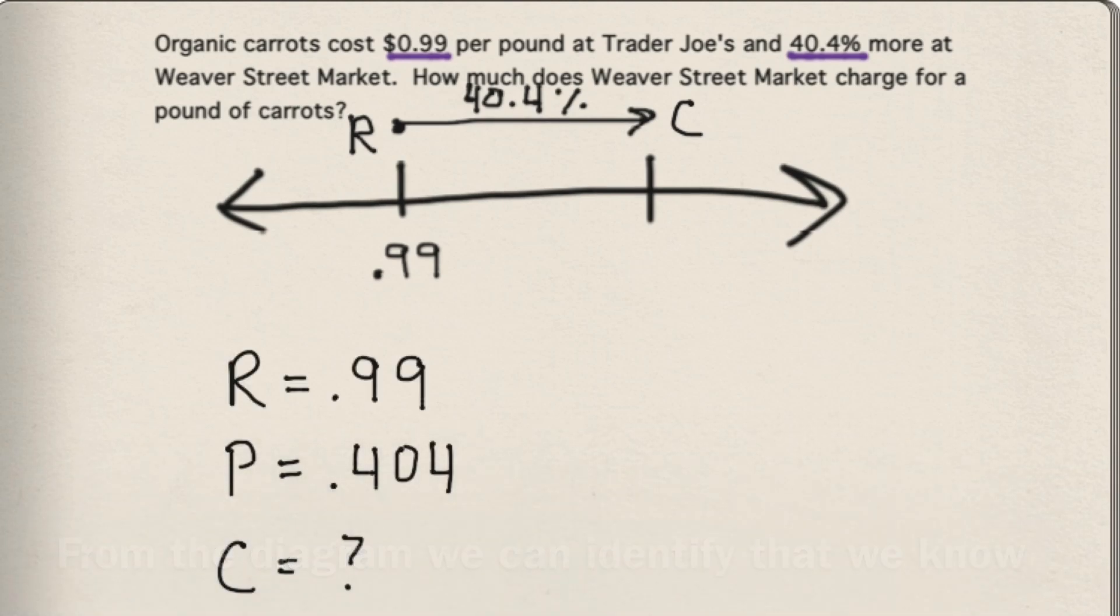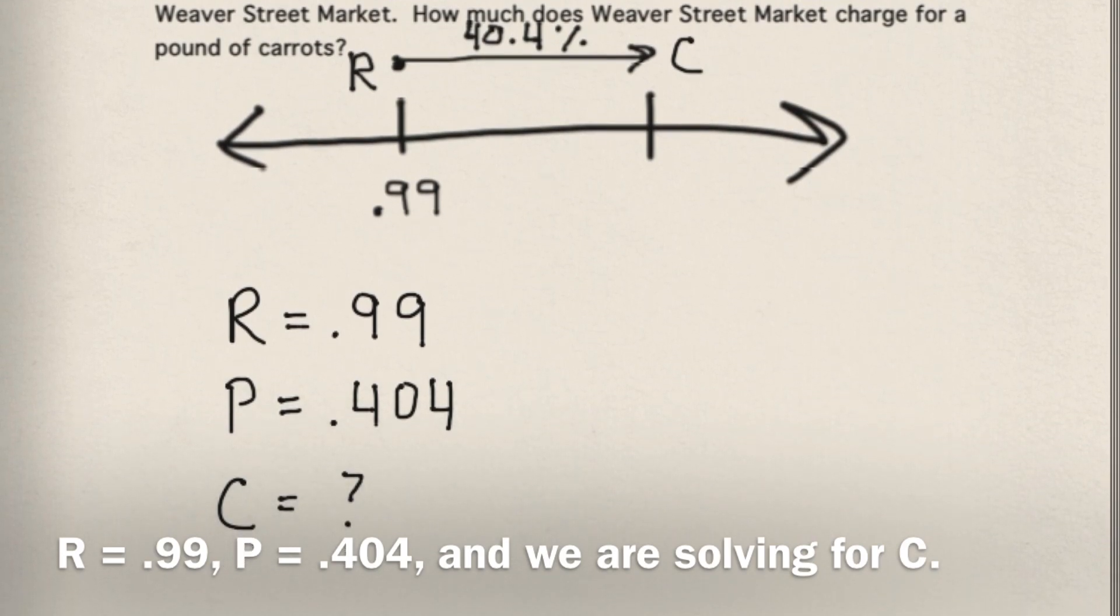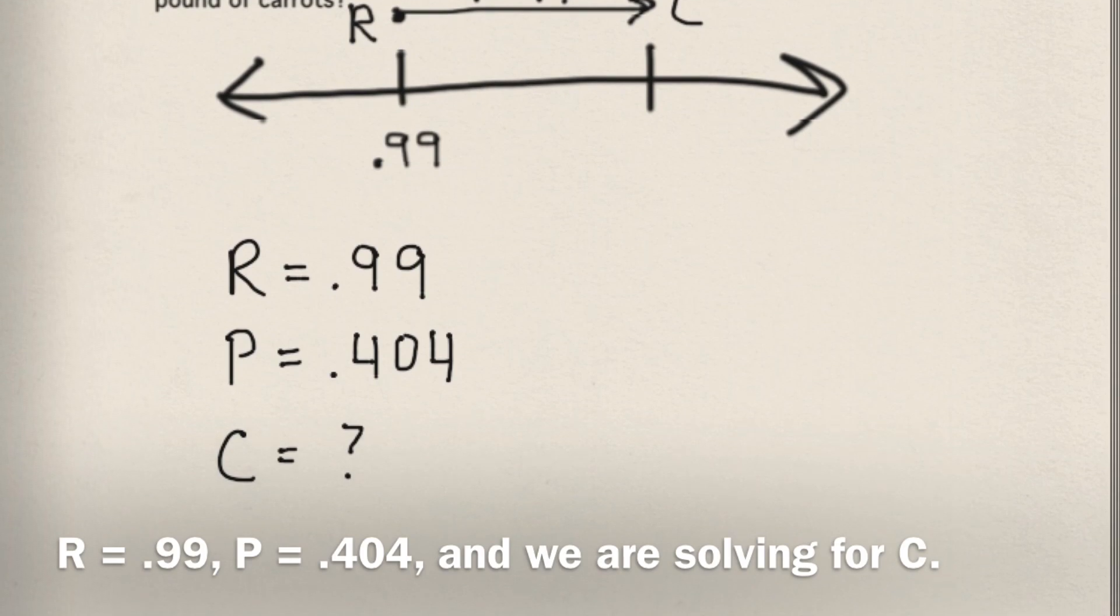From the diagram, we can identify that we know r equals 0.99, p equals 0.404, and we are solving for c.